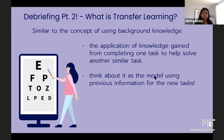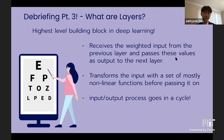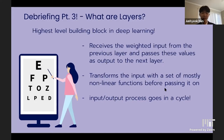Transfer learning is the application of artificial knowledge gained from completing one task to help solve another similar task — think of it like applying background knowledge to different concepts. A layer receives weighted input from the previous layer, transforms it with mostly non-linear functions, and passes values as output to the next layer.